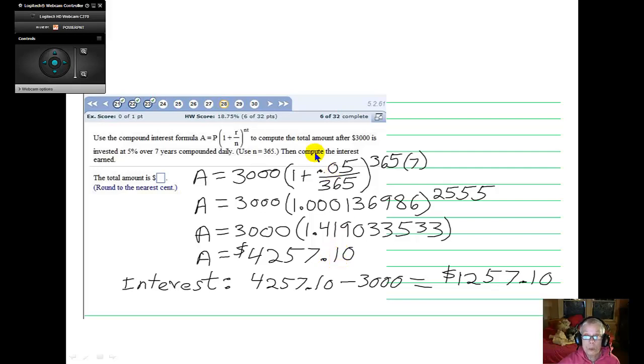Now we're asked another question. Not only do we have to compute the accumulated amount of money, but we have to compute the amount of interest earned. The interest earned is going to be the difference between what we put into the bank and what we're taking out of the bank. We're taking out more. How much more? $1,257.10 more. So this was the interest we earned over those 7 years.